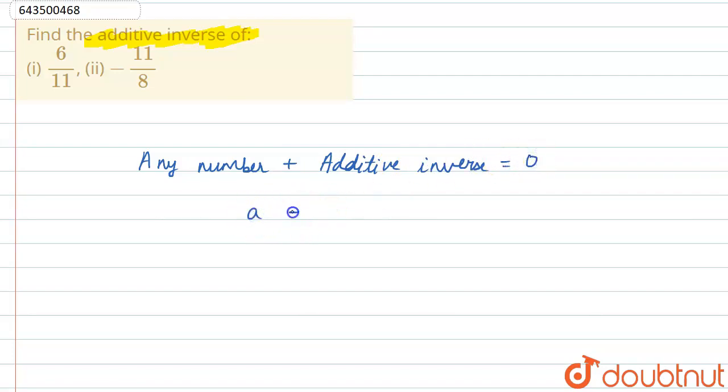If the number is a, then the additive inverse is minus of a, as a minus a will come out to be 0.